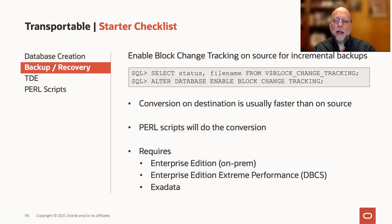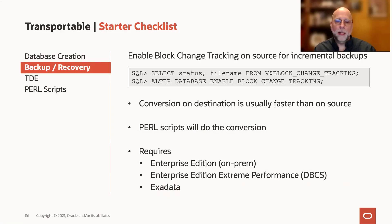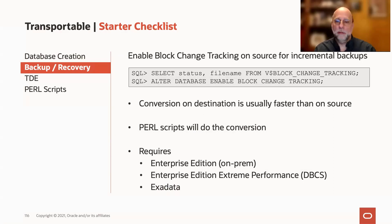When you're performing your backup and recovery and dealing with incremental backups, it's best to have block change tracking enabled on the source database. The reason is simply performance. With block change tracking enabled, we will know exactly which blocks changed in that source database between the level zero and the level one backup, so we don't have to scan the whole database to find changed blocks as of a specific SCN. It makes your incrementals go that much faster and reduces the downtime.